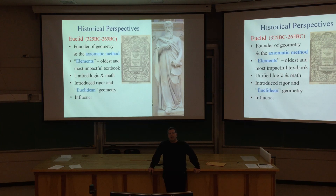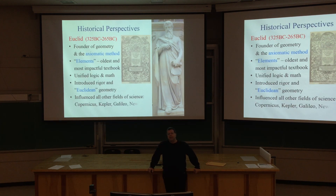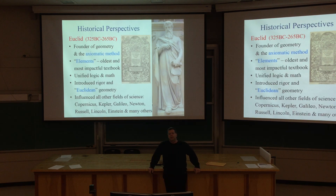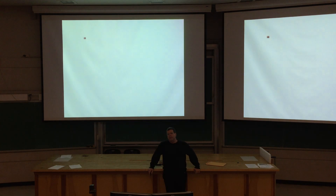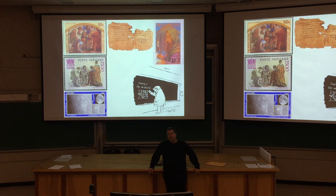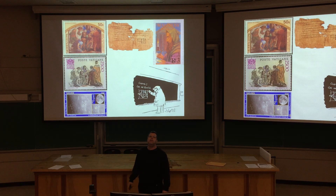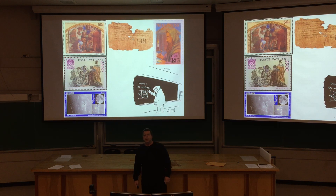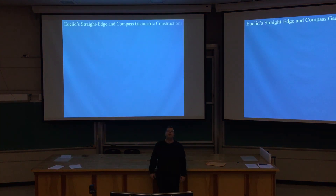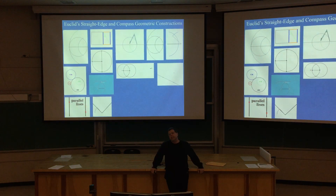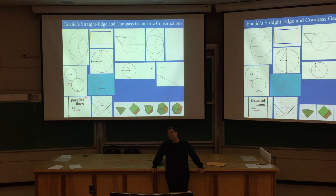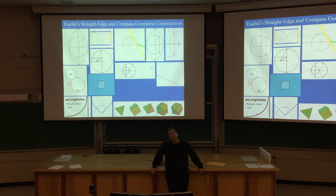Elements unifies math and logic and introduced rigor to mathematical thinking. It influenced every other famous thinker after that, including Kepler, Galileo, and Einstein. Euclid gets a lot of credit for laying down the foundation for how we do math, science, and engineering today. After all these millennia, it's still the best method we know of for understanding the universe and for being effective engineers, scientists, and inventors.